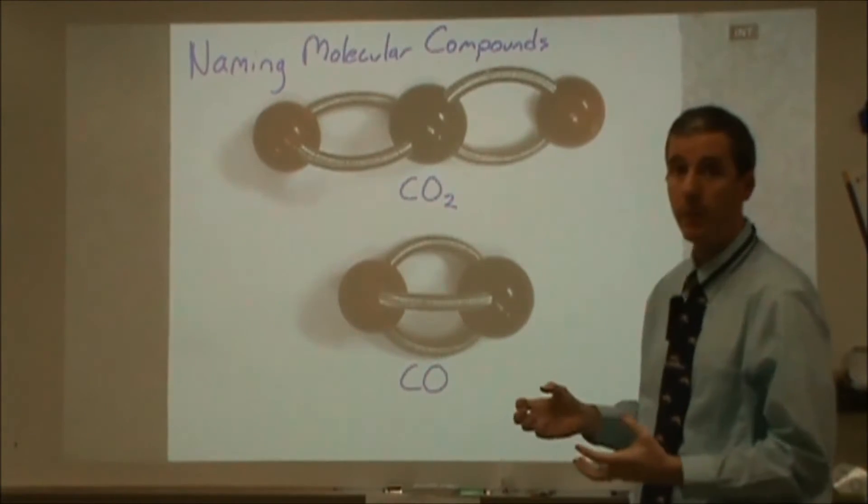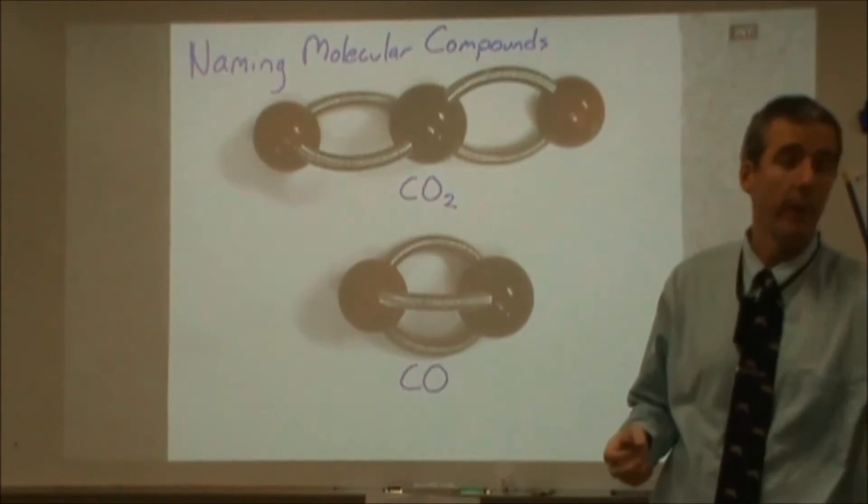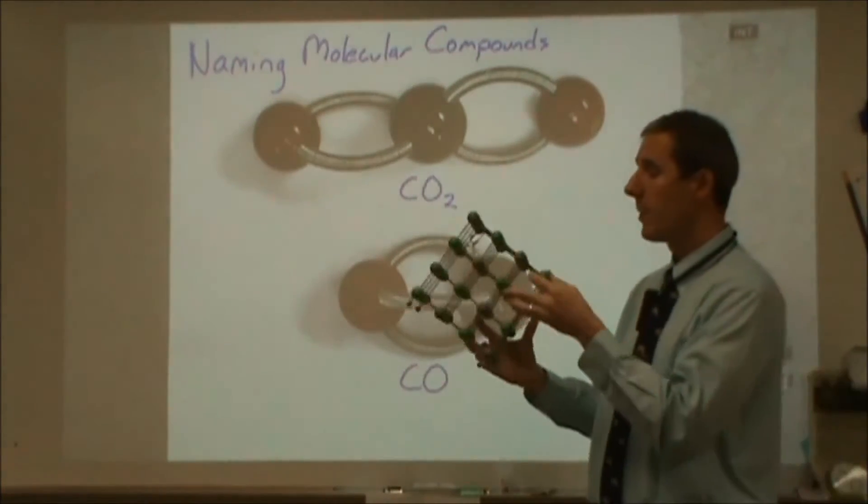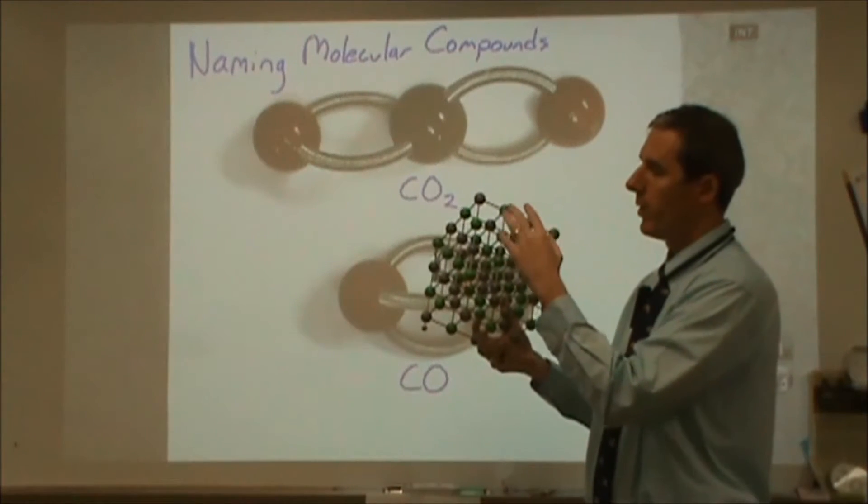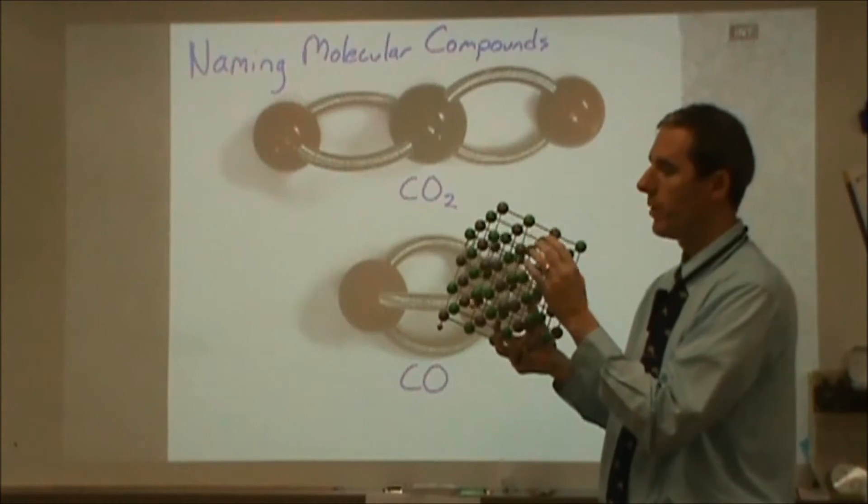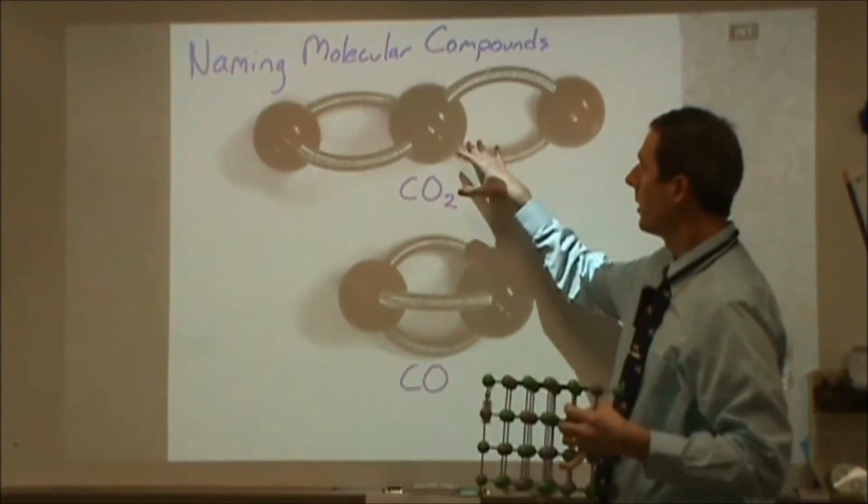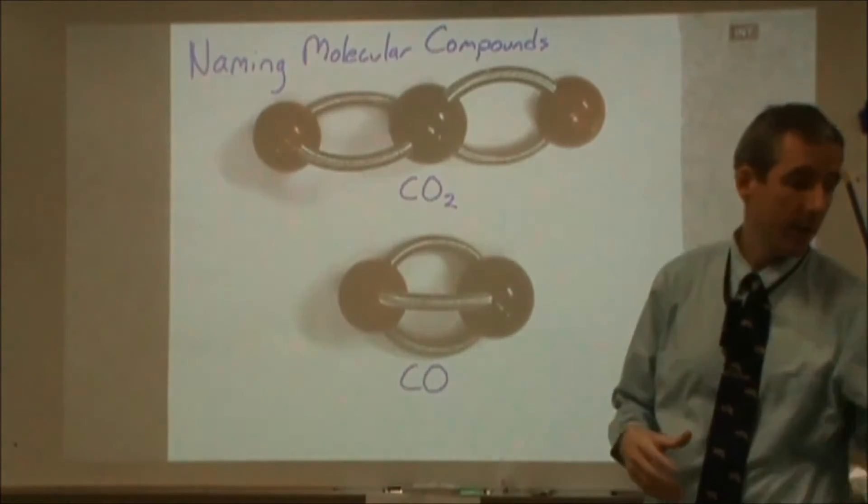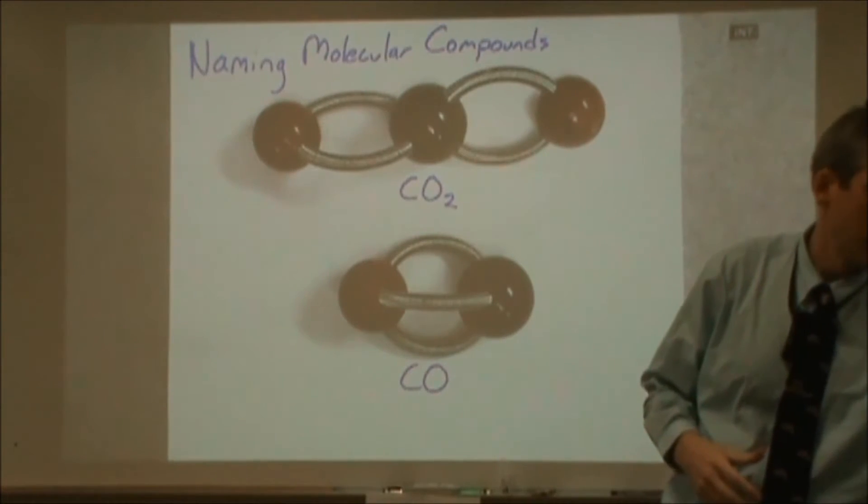Naming molecular compounds is different than naming and formula writing for ionic compounds. In an ionic compound you're dealing with a structure where you're looking at formula units, how many there are relative to one another, you're not looking at single molecules. Here we're looking at single molecules and because of the way that the bonding occurs in here.